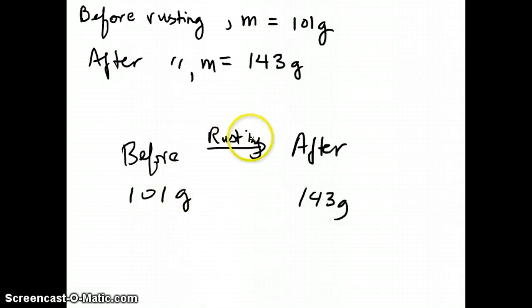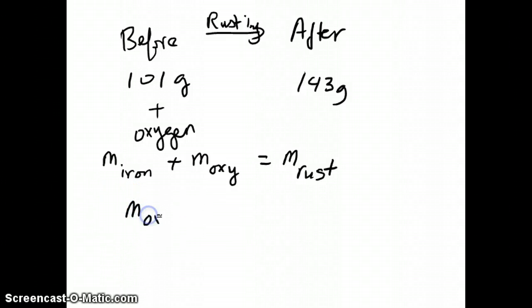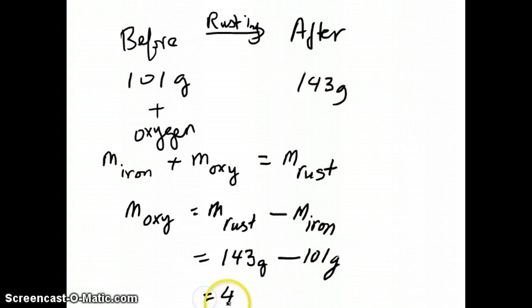Now the masses are not the same, but because we haven't taken into account the fact that during the rusting process, you have a certain amount of oxygen gas that reacted with the iron. So in order to figure out the mass of the oxygen gas, the equation you need to set up is the mass of the iron before rusting plus the mass of the oxygen is equal to the mass of the rust. We can solve for the mass of the oxygen, which is just the mass of rust minus the mass of iron. So then 143 grams minus 101 grams, and that's equal to 42 grams, and that's your answer. So that should be hopefully fairly straightforward for all of you to work.